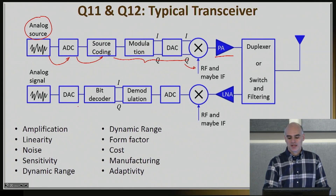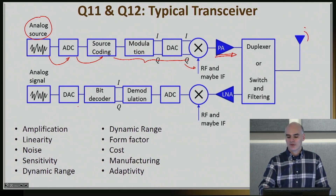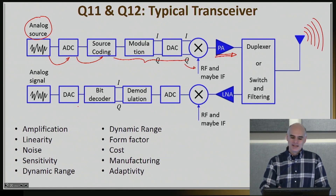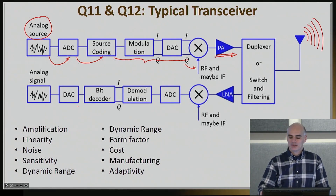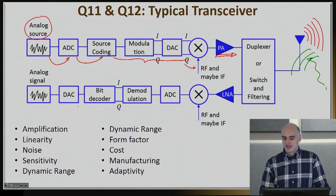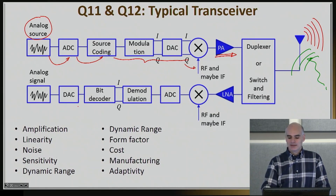You're going to go through the PA, you're going to transmit through the duplexer or a switch, and off you go — the waves are in the air. And exactly the opposite will happen when you're basically trying to receive a signal. The antenna will hopefully get something from the intended reception.